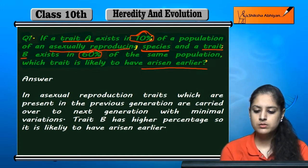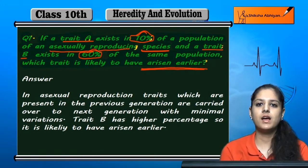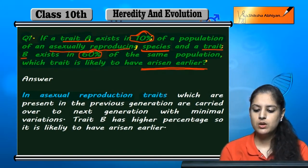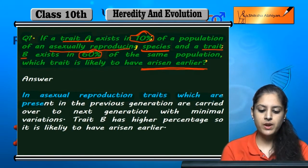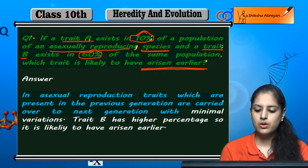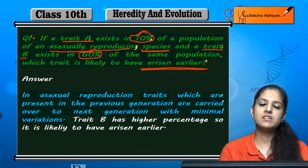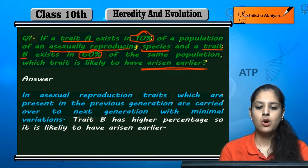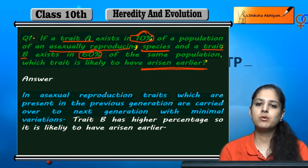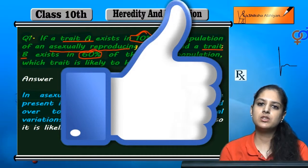In asexual reproduction, traits which are present in the previous generation are carried over to the next generation with minimal variation. The variation from generation to generation is very low.